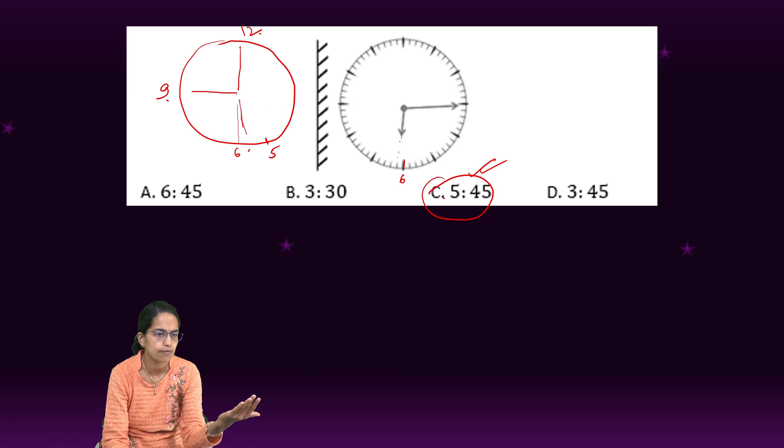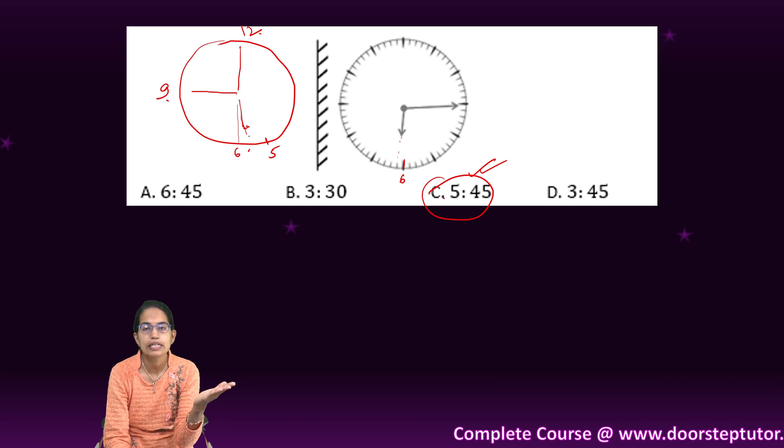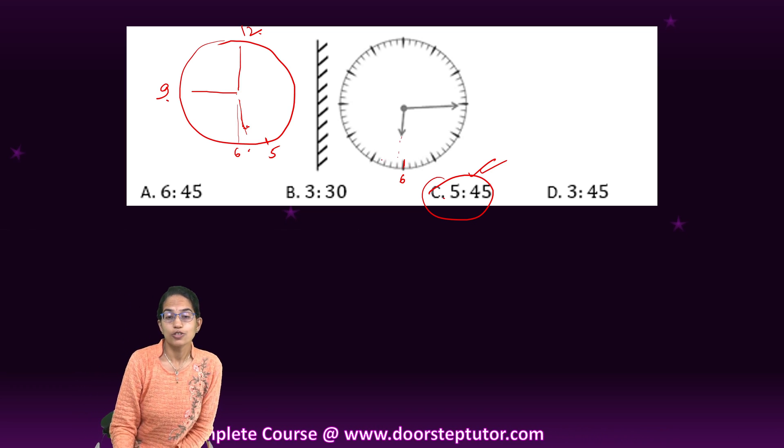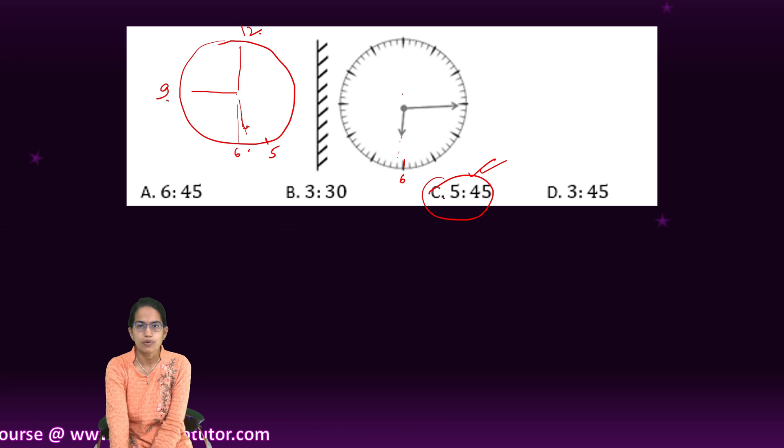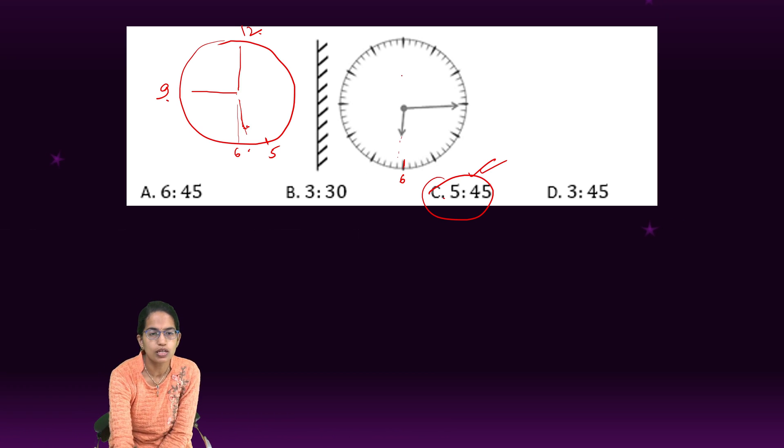So 5:45 would be the correct option. Since it's after six a little after six, when it's the mirror image, the original one would be a little right to it. Since it's a little left of six, it would be little right of six. That's the major difference that you have to find out. So even with water images we would have this clock problems that we would solve, and this is one of the logics that how you solve the clock problem.